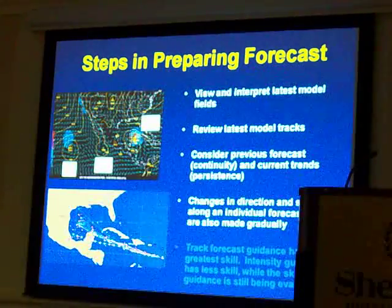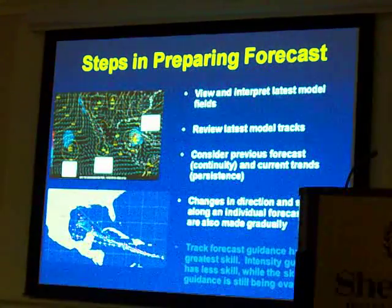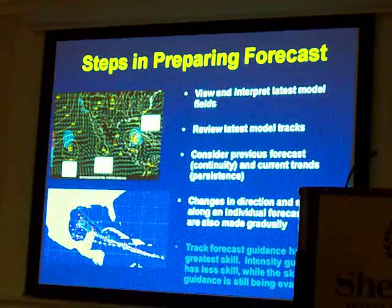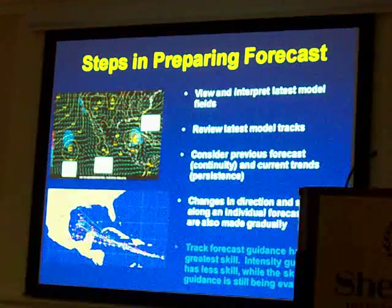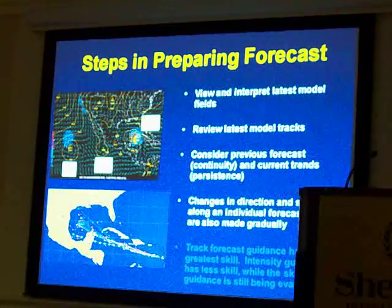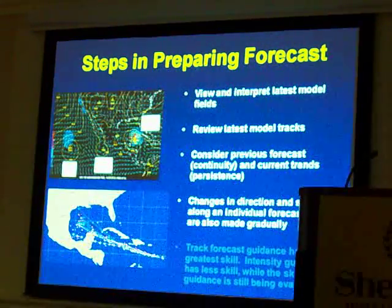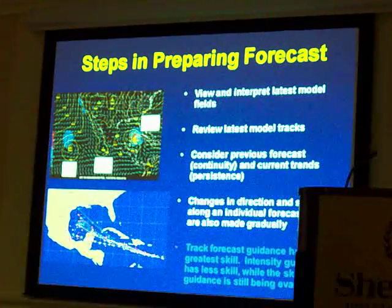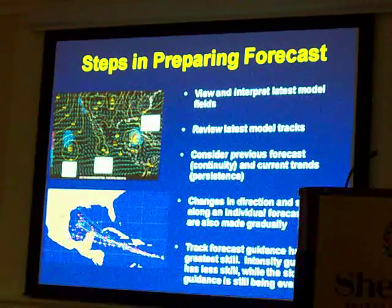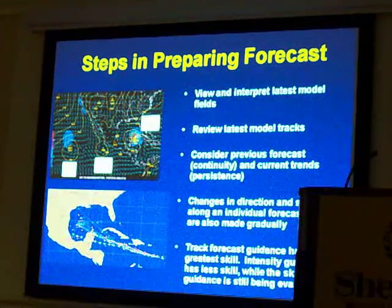Changes in direction and speed along an individual forecast track are also made very gradually, and we oftentimes lag what is going on. We do this because we want to make sure that we're making the right decision. The track forecast guidance, of course, has the greatest skill.